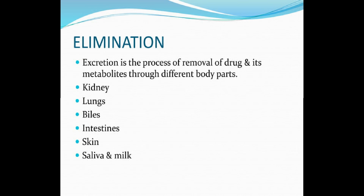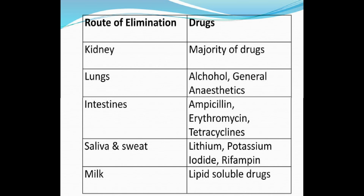Last, elimination — also known as excretion. Excretion is the process of removal of a drug and its metabolites through different body parts: kidney, lungs, bile, intestine, skin, saliva, and milk. Via the kidney, majority of drugs are eliminated. Via the lungs, alcohol and general anesthetics are eliminated. Via the intestine, ampicillin, erythromycin, and tetracycline are eliminated. Via saliva and sweat, lithium, potassium iodide, and rifampin are eliminated. Via milk, lipid-soluble drugs are eliminated.